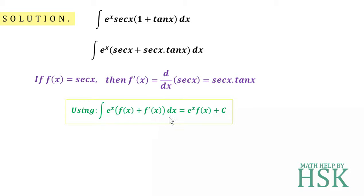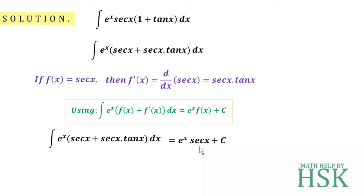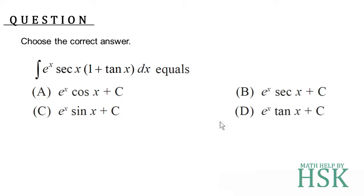Using the standard result: if we have e to the power of x times [f(x) + f'(x)], then the integral equals e to the power of x into f(x) plus C. Comparing, f(x) equals sec x, so this integral equals e to the power of x into sec x plus C.